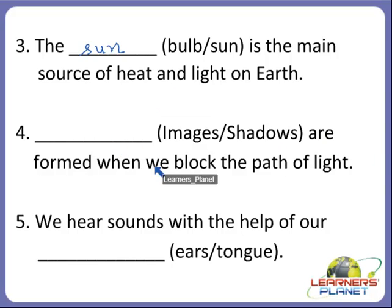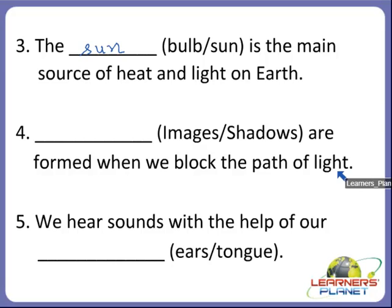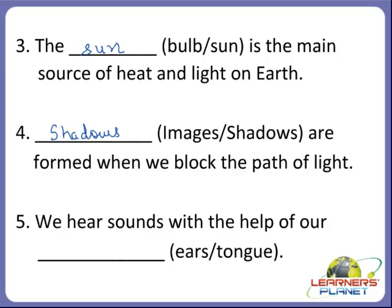The dash are formed when we block the path of light. What are formed when we block the path of light? Do images form or shadows form? Shadows are formed when we block the path of light.